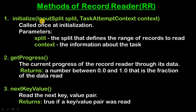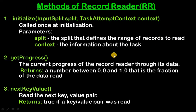Record Reader has six abstract methods. The first method is initialize, which is called once at initialization. Initialize has two parameters: split, which defines the range of records to read, and context, which is the information about the task.